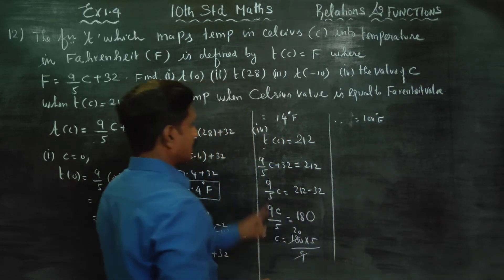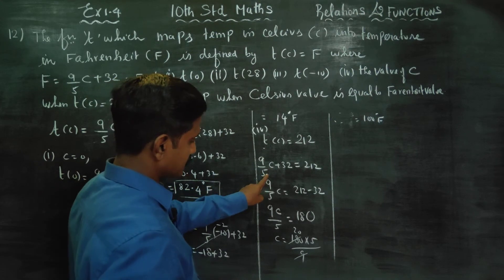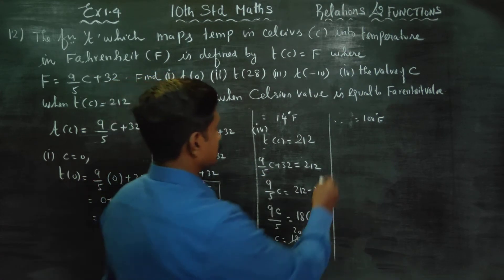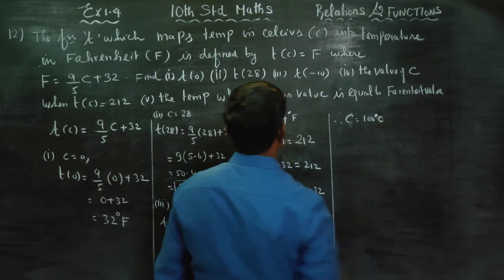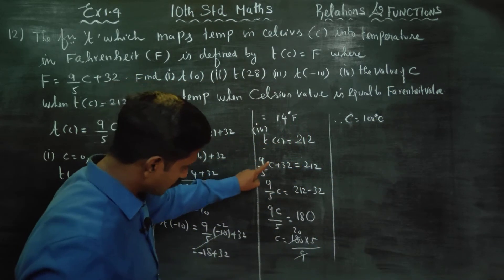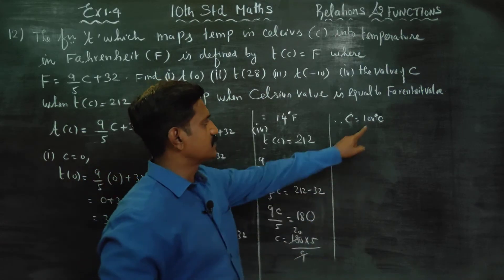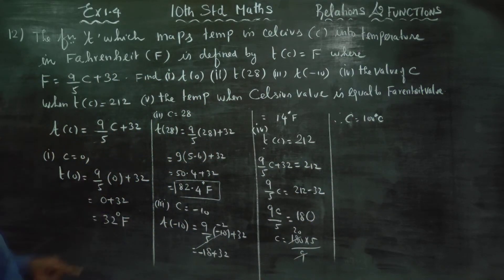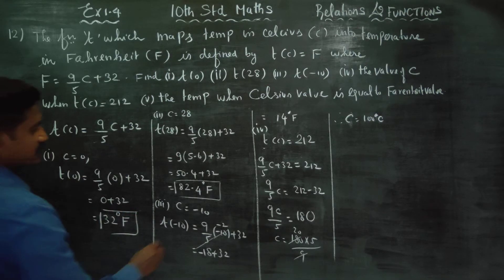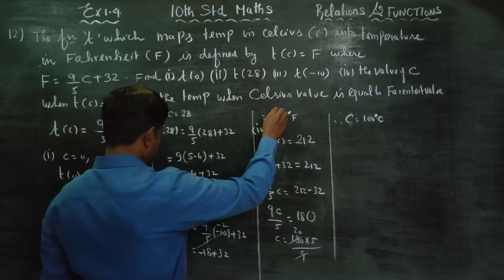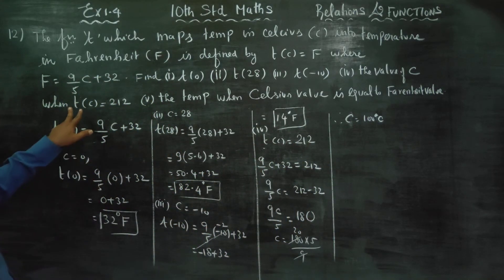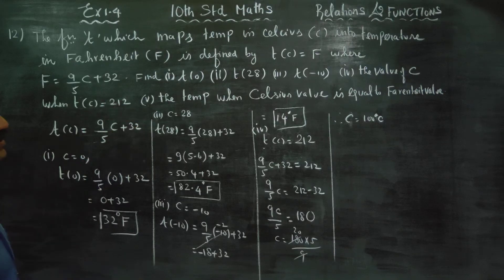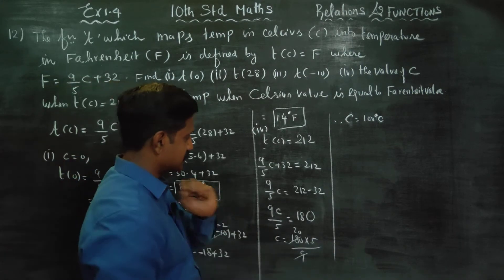T of C is equal to 100 degree Celsius. The answer is C equal to 100 degree Celsius. This is Celsius — the first, second, and third sums gave Fahrenheit, but this sum the answer is in Celsius.